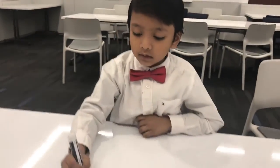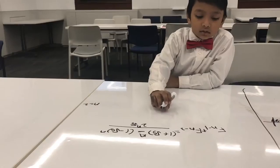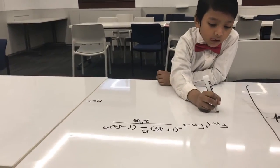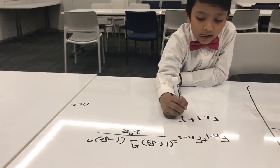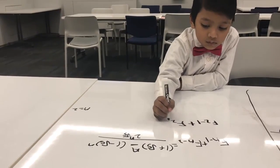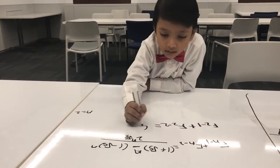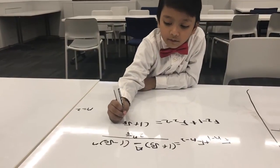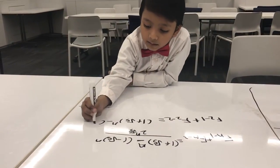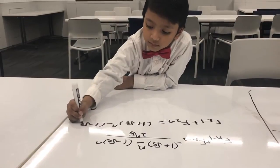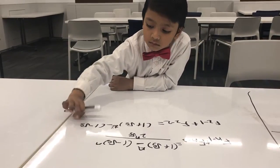I would like to set n to 2. So F2 minus 1 plus F2 minus 2 equals 1 plus square root of 5 raised to n, minus 1 minus square root of 5 raised to 2.